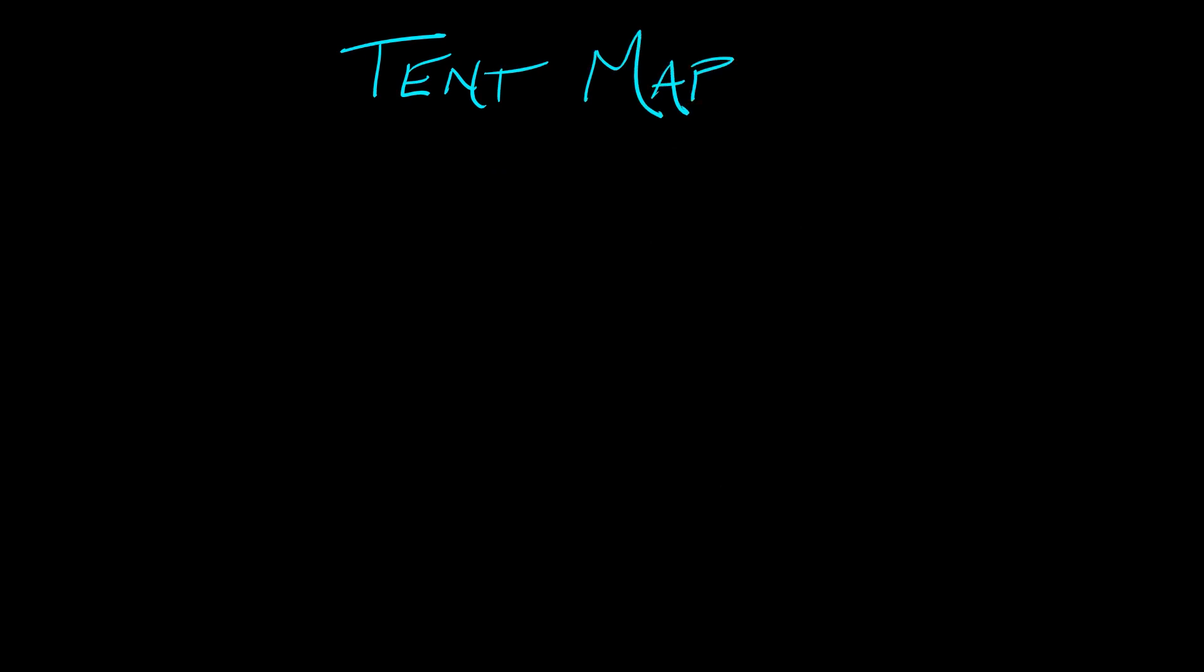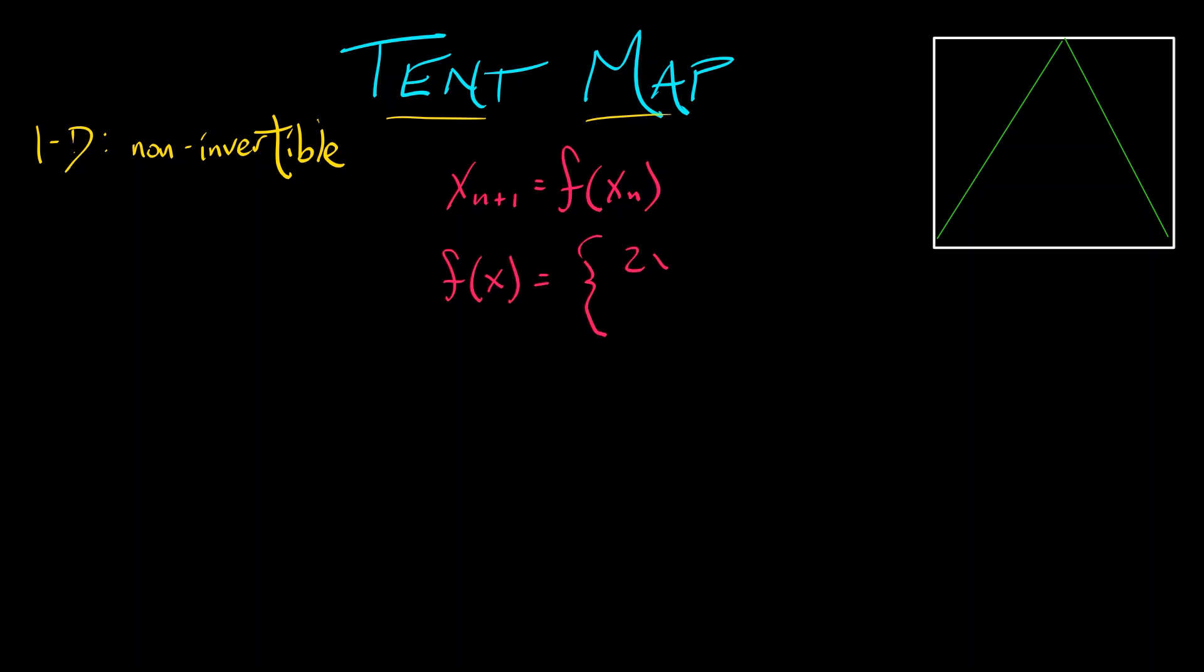Compare and contrast what we did with the tent map. Recall the tent map. This also was a one-dimensional, non-invertible map, something of the form x_{n+1} equals f(x_n), where now this function is not a doubling function. It's a continuous function. It's kind of like doubling and then orientation reversing doubling. So f(x) is 2 times x if x is between 0 and 1/2, and it's 2 minus 2 times x if x is between 1/2 and 1.